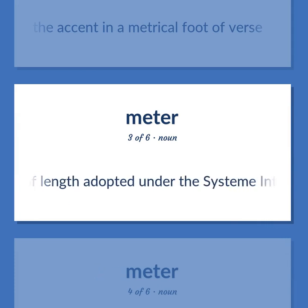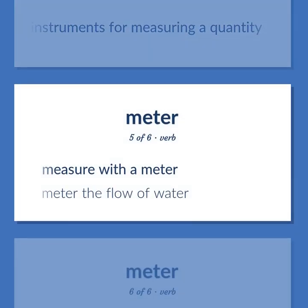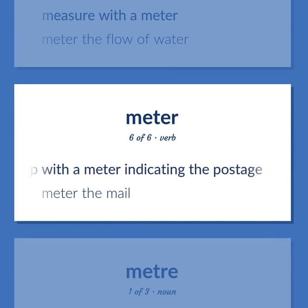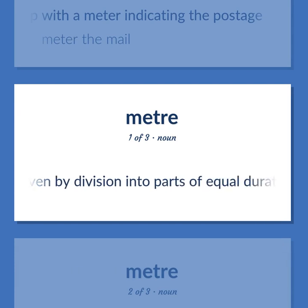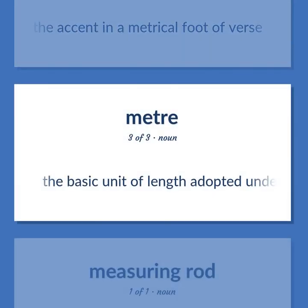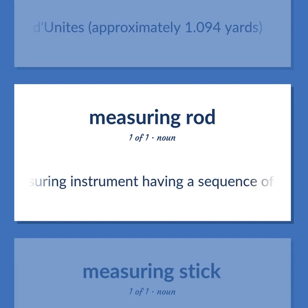Meter: The basic unit of length adopted under the Système International d'Unités, approximately 1.094 yards. Any of various measuring instruments for measuring a quantity. Measure with a meter; meter the flow of water. Stamp with a meter indicating the postage; meter the mail. Rhythm is given by division into parts of equal duration. Prosody: the accent in a metrical foot of verse. Measuring instrument having a sequence of marks at regular intervals, used as a reference in making measurements.